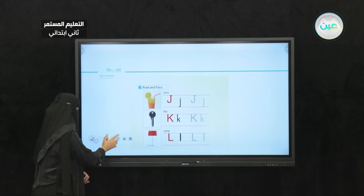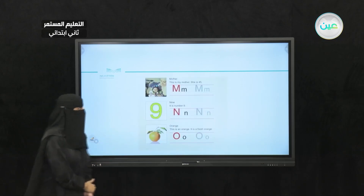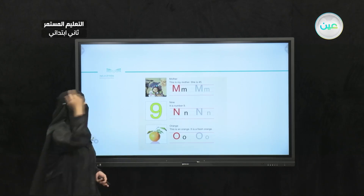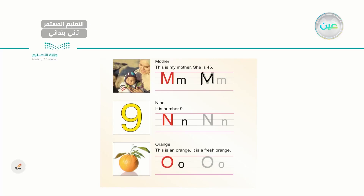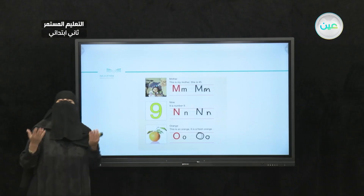Let's go to the next set of letters. Now I have the letter M. Let's start capital M — make sure you are writing between the lines. M, mother. Next letter is N — nine, nest, near. Then I have the letter O. I have capital O and small o. Orange. Very good. So here I have M, N, and O.